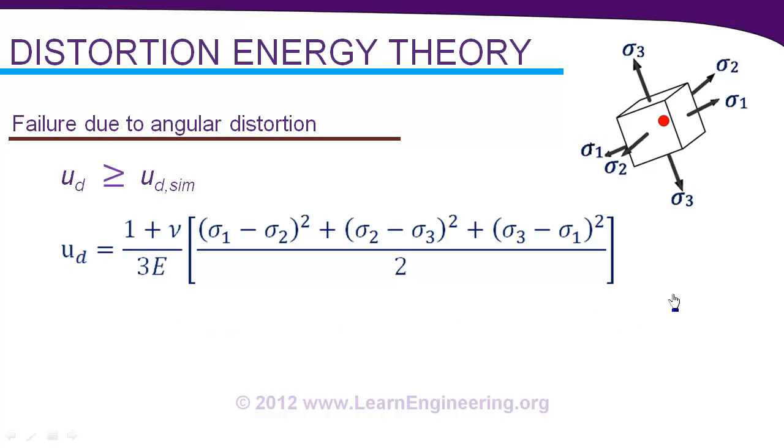Now this is distortion energy for an actual system for a three-dimensional case. So what's the second term? Distortion energy for a simple tension test. There you can put sigma 2 and sigma 3 as 0. And you can put sigma 1 as yield stress. Assume it is a ductile material. Then it will be simplified like this. Distortion energy in a simple tension test at the time of failure.